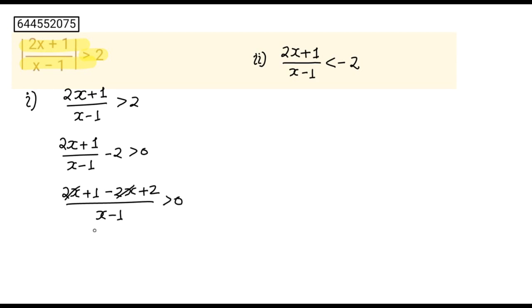This 2x and 2x will get cancelled out. And here, you will get 3/(x - 1) greater than 0.